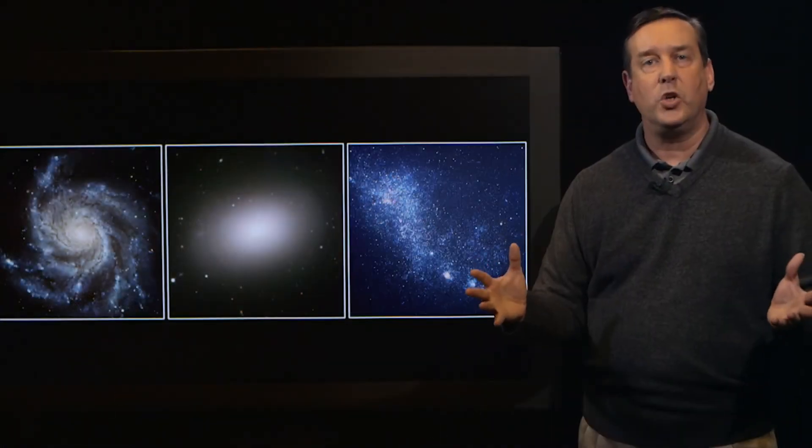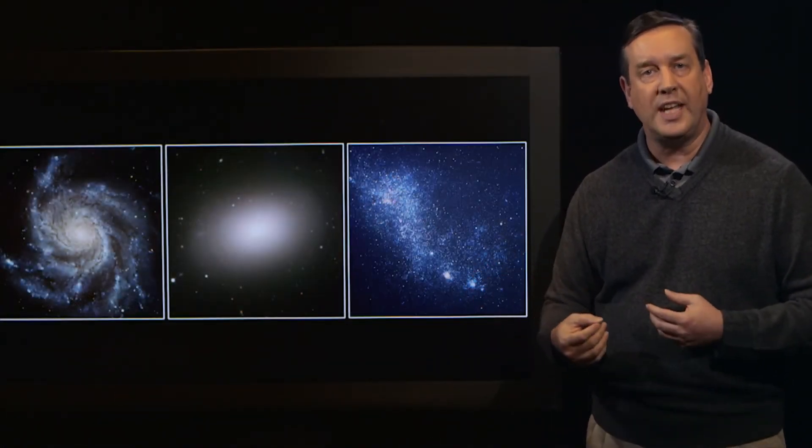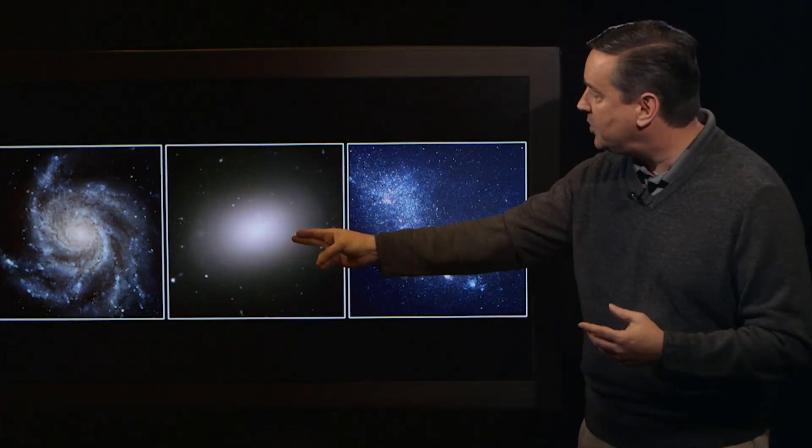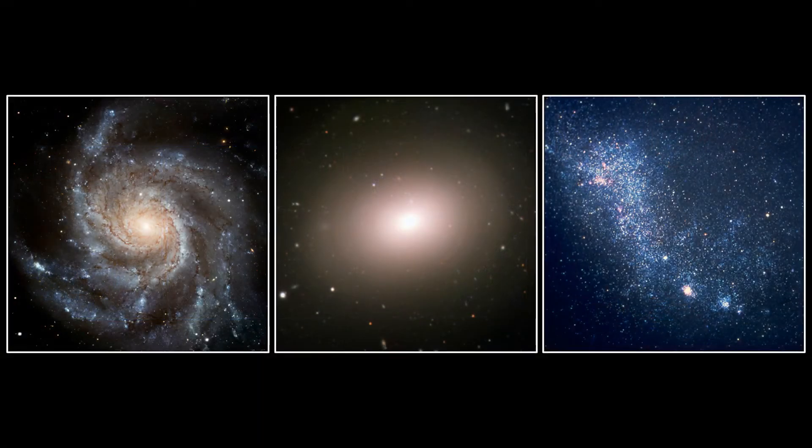Across the entire universe, there are about a hundred billion galaxies. They come in spiral, elliptical, and irregular shapes, and their sizes range from dwarfs to giants.